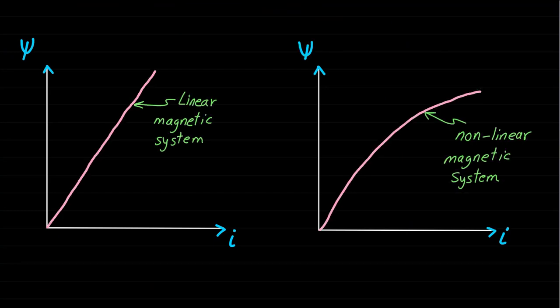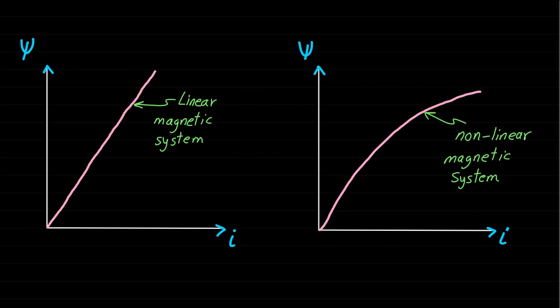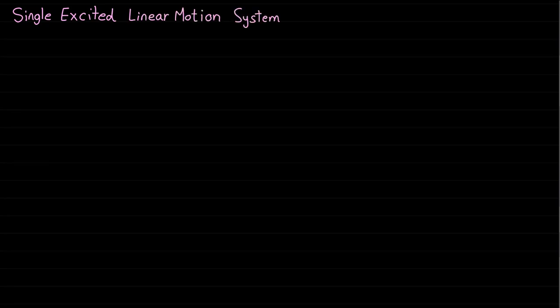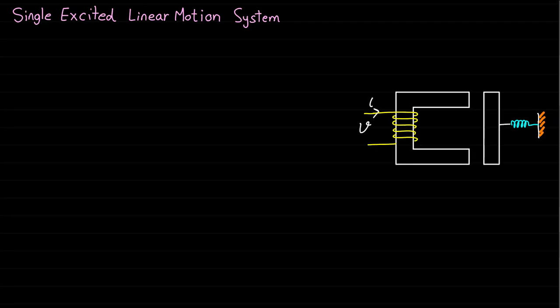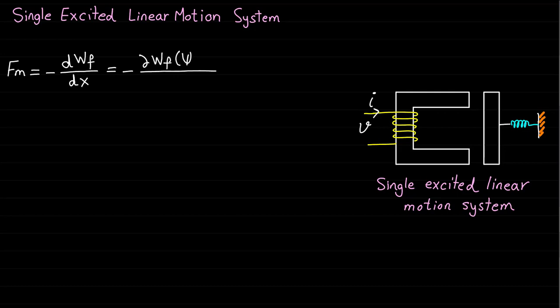For analytical derivation purposes, the magnetic systems are usually simplified and assumed to be linear magnetic systems, as we will see in this and future lectures. Now, let's first start with the single excited linear motion systems — such as this relay system — and try to develop the force using the following two force expressions.